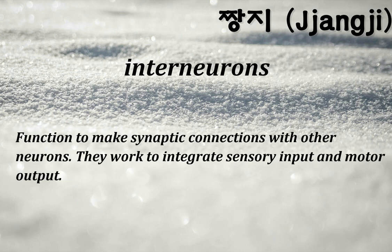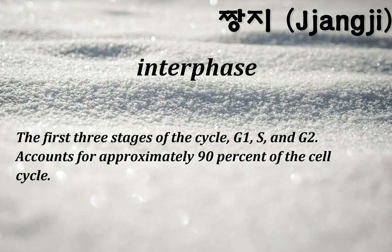Interneurons: function to make synaptic connections with other neurons; they work to integrate sensory input and motor output. Interphase: the first three stages of the cycle — G1, S, and G2 — accounts for approximately 90% of the cell cycle.